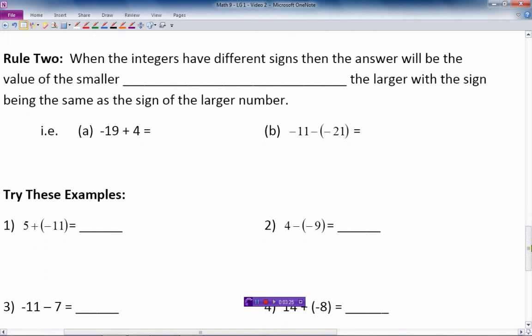When integers have different signs, then the answer will be the value of the smaller number subtracted from the larger number, with the sign being the same as the sign of the larger number.